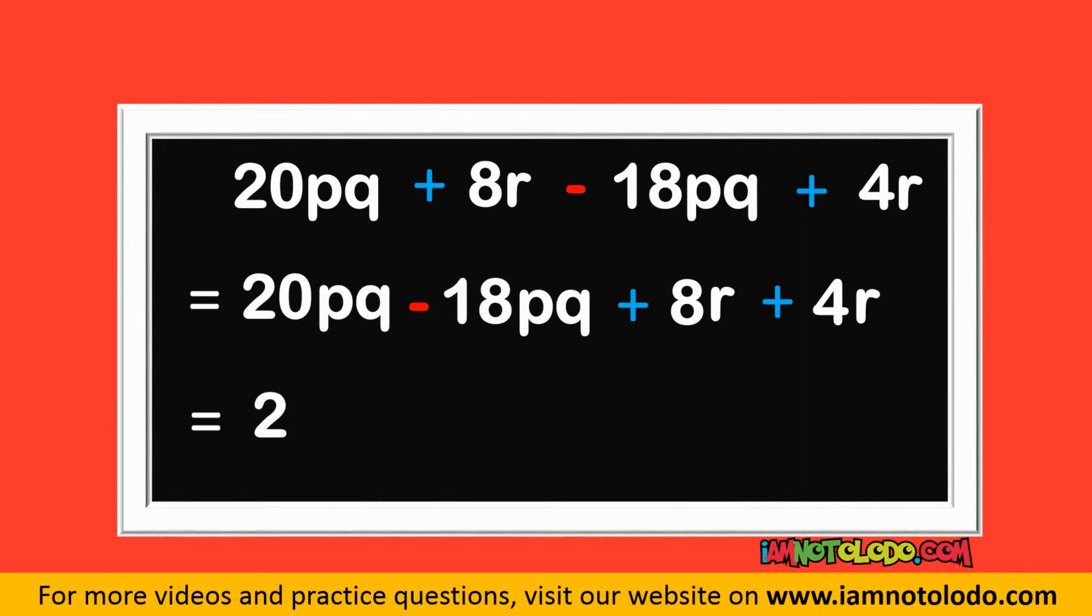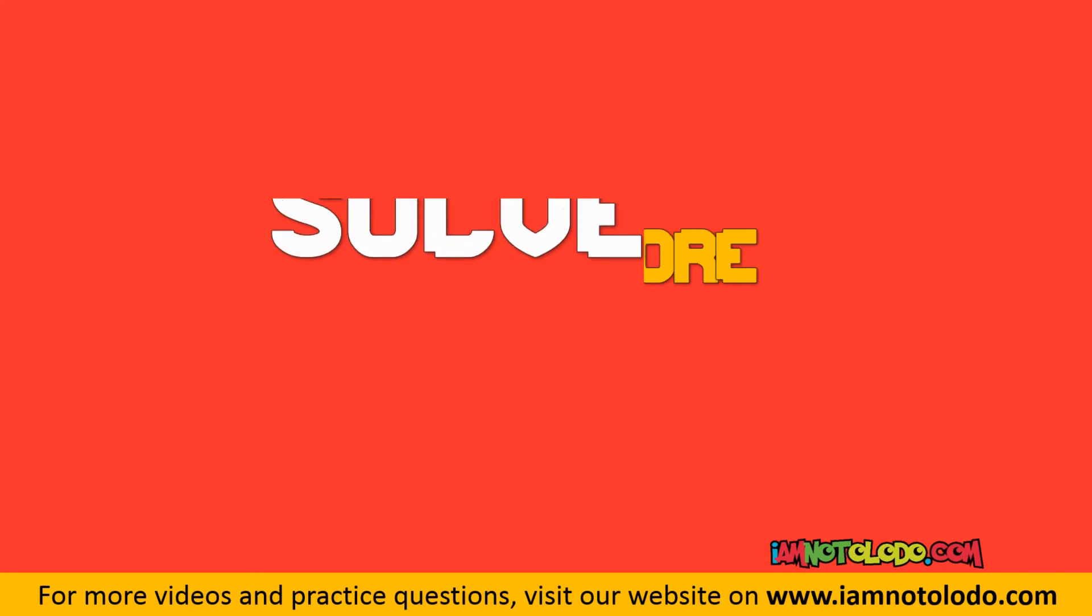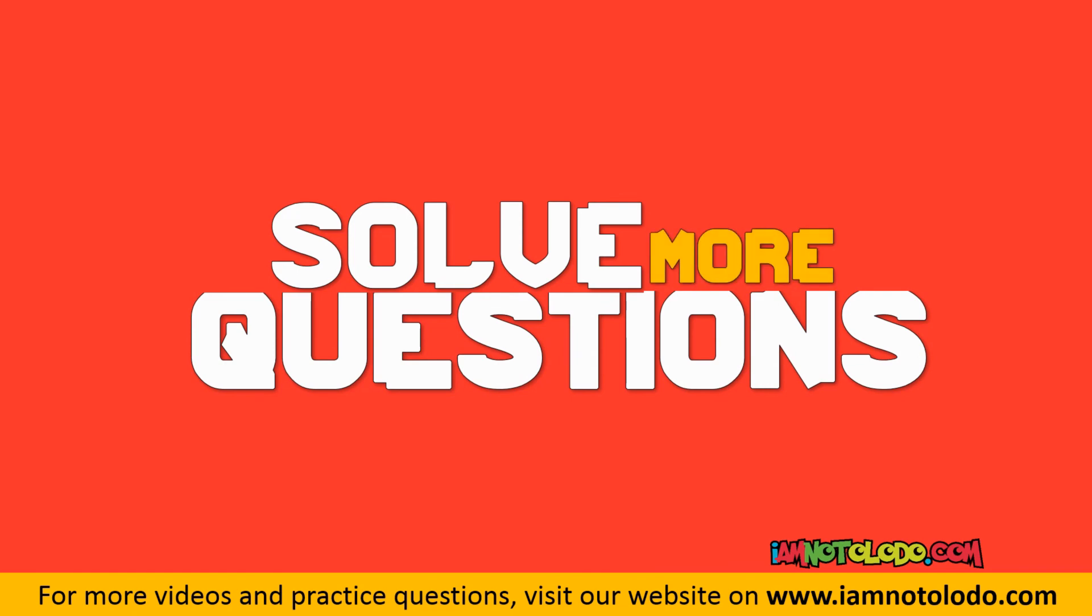20 minus 18 is 2. Write down your PQ. Plus 8R plus 4R is 12R. Write down your R. This is our final answer. Did you get it right?